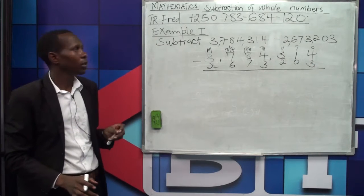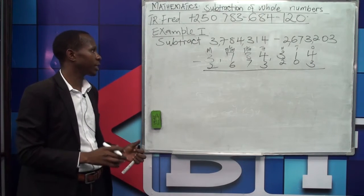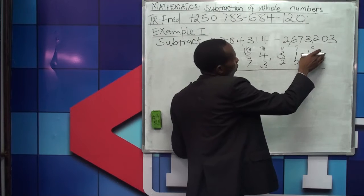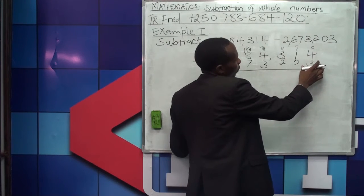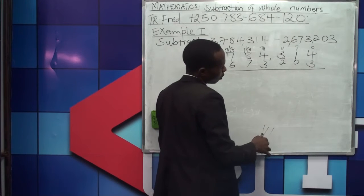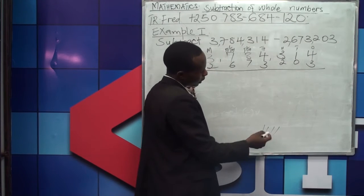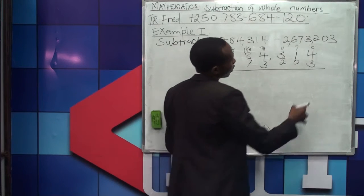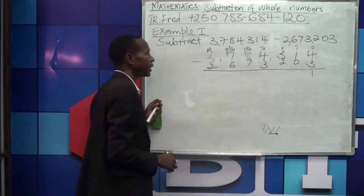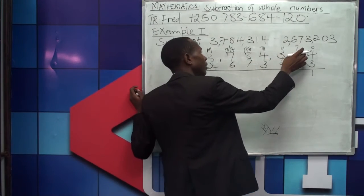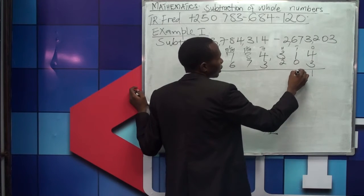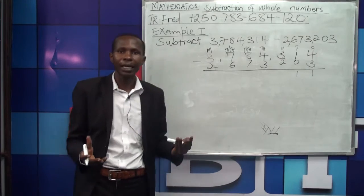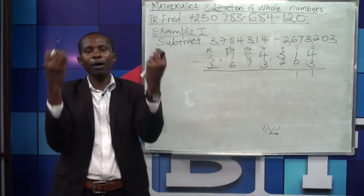From there we are now going to be in a position to subtract. When we begin with the ones, we have four here and we are taking away three. If I have four and they ask me to remove three, I count: one, two, three — I remain with one. So I'll put one here. Then one take away zero gives one. Then three take away two.